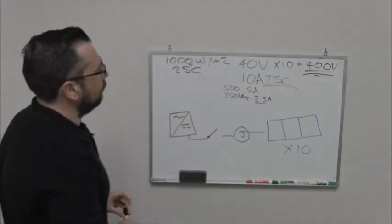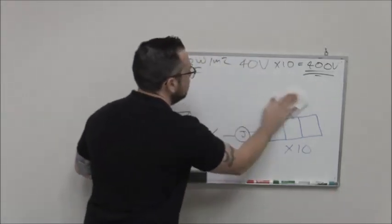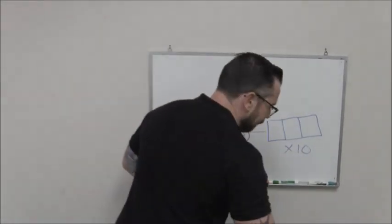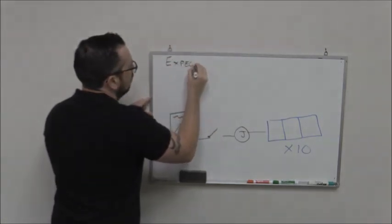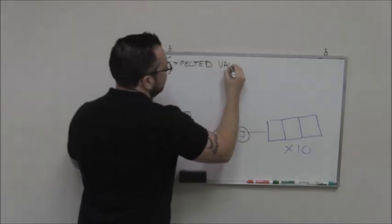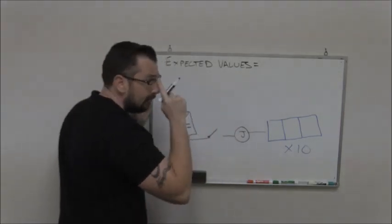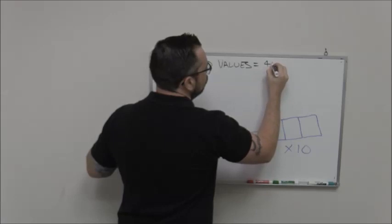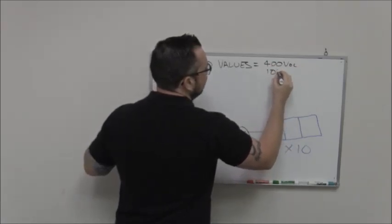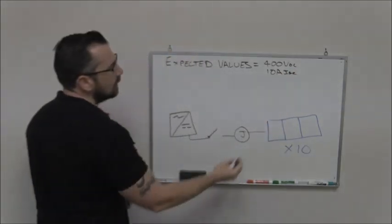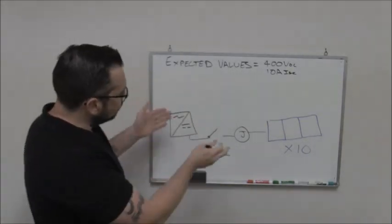So I have my expected values. I have 10 panels. And let's say for instance, it is 1000 watts per meter squared. So when I run my test, my expected values at 1000 watts per meter squared, 25 degrees Celsius, I should see 400 volts and I should see 10 amps. That's what I'm expecting to see when I run my test.